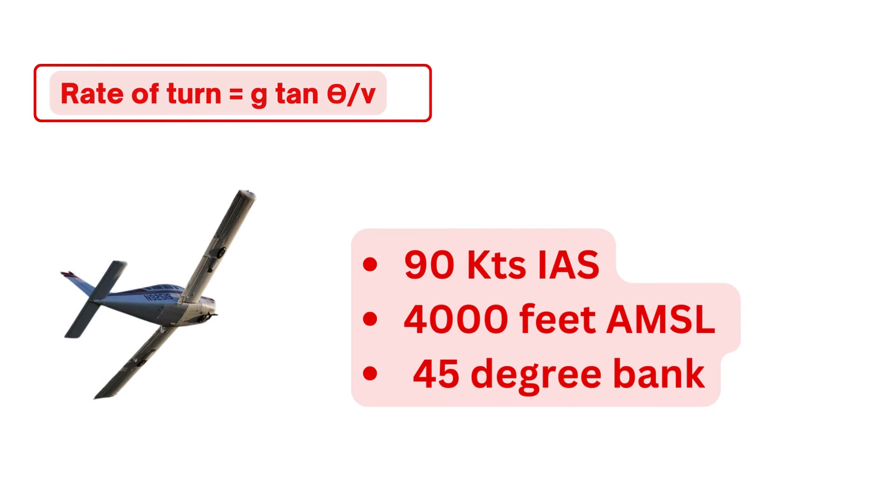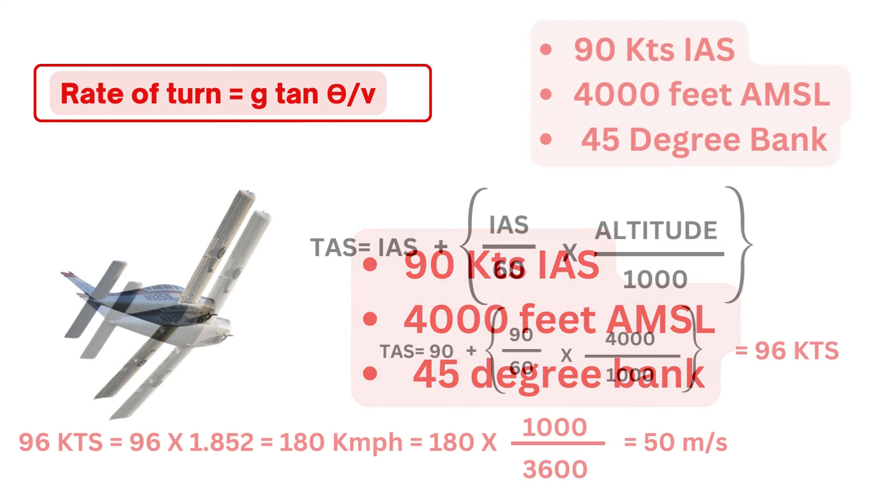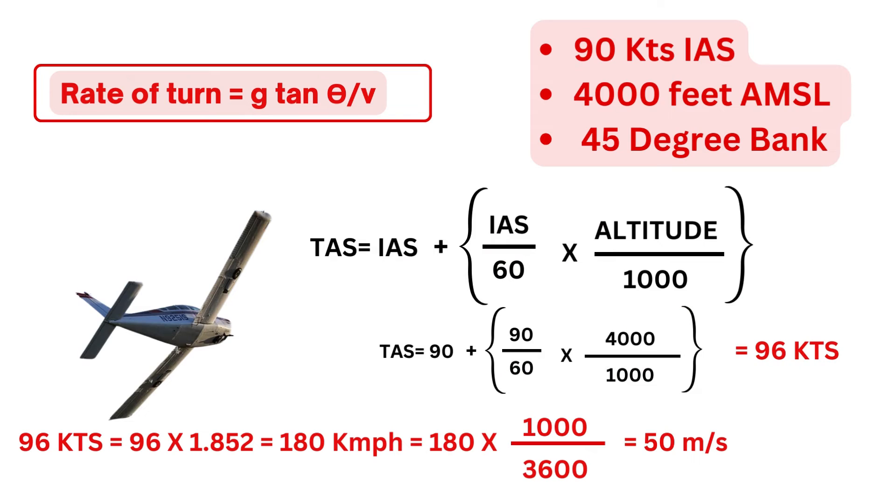So now let's calculate the rate of turn for Cessna 152 flying at 90 knots at 4,000 feet over mean sea level, turning with bank angle of 45 degree. Remember v here is TAS and not the IAS. So first we have to convert IAS to TAS using the formula as shown on the screen. So we get a TAS of 96 knots. Now since the value of g in the formula is in meter per second square, we need to convert the TAS into kilometer per hour followed by meter per second. So we get TAS of 180 kilometer per hour and converted to meter per second. It comes out to be 50 meter per second.